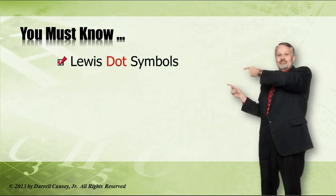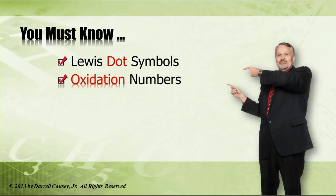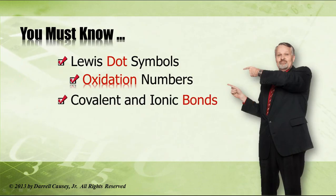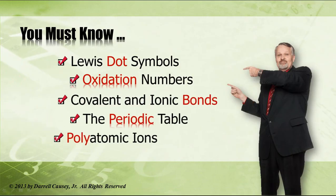Alright, you must know Lewis dot symbols, oxidation numbers, covalent and ionic bonds, the periodic table, and polyatomic ions. You need to be familiar with these and know how to use the periodic table. Remember, that is your most important tool in the chemistry class.